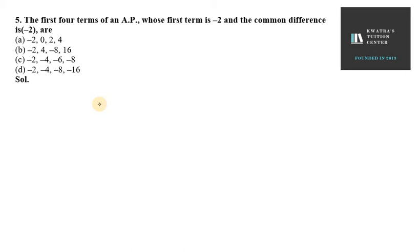Let's start with question number 5. It says the first four terms of an AP whose first term is minus 2, that means a is minus 2, and the common difference is minus 2. So we need to find the AP with these two conditions: a as minus 2 and d as minus 2.